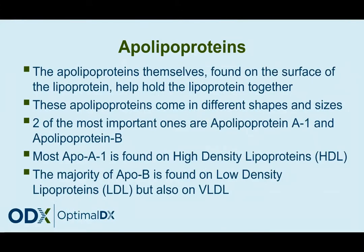Let's dive in and take a look at ApoA1 and ApoB. The apolipoproteins are found on the surface of the lipoprotein. They help hold the lipoprotein together and come in various different shapes and sizes. The two most important ones are apolipoprotein A1 and apolipoprotein B. Most ApoA1 is found on high-density lipoproteins, or HDL, and the majority of ApoB is found on low-density lipoproteins, as well as on a molecule called very low-density lipoproteins, or VLDL.